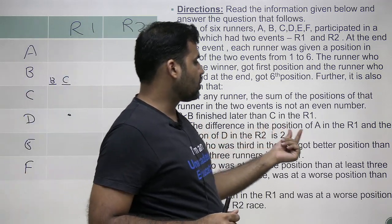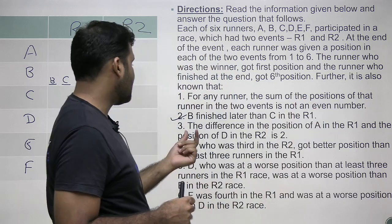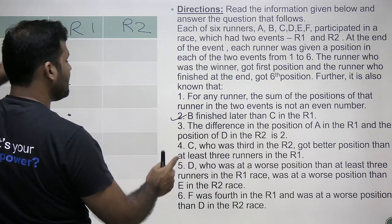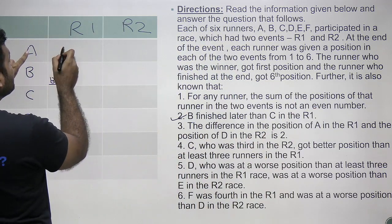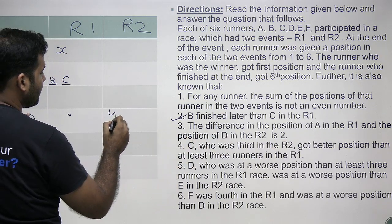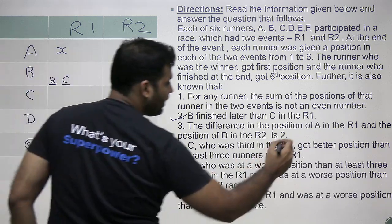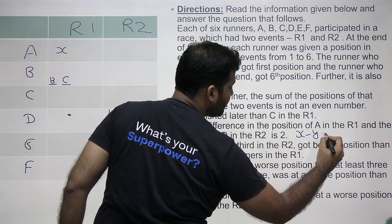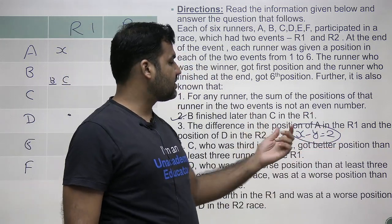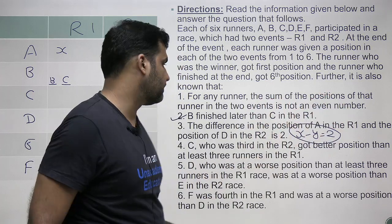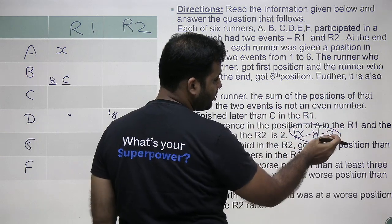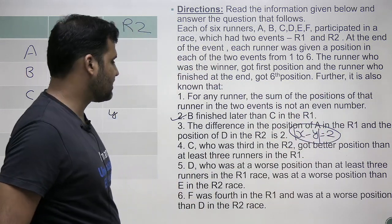The difference in the position of A in R1 and the position of D in R2 is 2. If the position of A in R1 is X and the position of D in R2 is Y, then the absolute difference of X and Y has to equal 2. Which value is larger is not specified — it simply says the difference equals 2. So X can be more than Y or X can be less than Y.